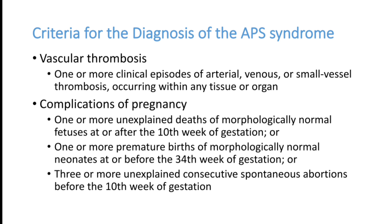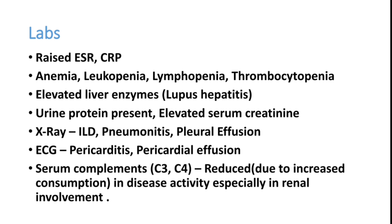APS can present as part of SLE or without SLE. For lab investigations, ESR and CRP will be elevated in almost all inflammatory conditions. Classical findings include lymphopenia, thrombocytopenia, and anemia. Elevated liver enzymes are seen in lupus hepatitis; proteinuria and elevated creatinine can also be present. X-ray can show interstitial lung disease, pneumonitis, and bilateral pleural effusion. ECG findings of pericarditis and pericardial effusion can be present. Complement levels are classically reduced in active disease, as they are utilized in antibody-complement mediated injury — especially in renal disease.